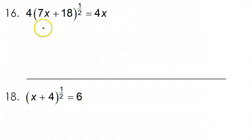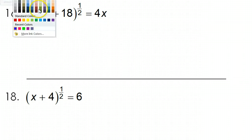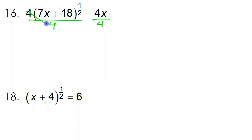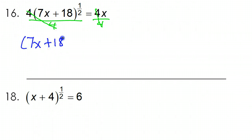Number 16 is very similar, so I encourage you to pause the video and try to do it by yourself first. Again, do not distribute this 4 — it has a power, you can't do it. Instead, divide both sides by 4. These 4s will cancel out, leaving us with 7x plus 18 to the 1/2 power is equal to x.